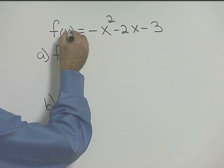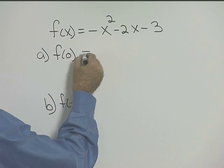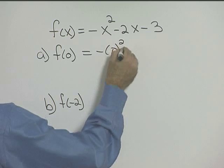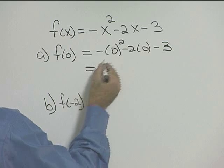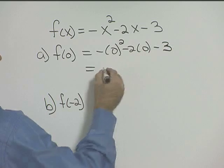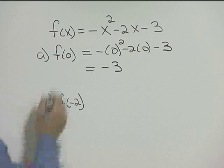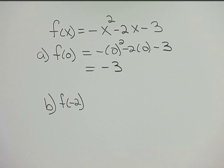So f of 0 means we replace x with 0. Every place there's an x, let's put a 0. Well that 0 minus 0, we're just simply left with negative 3. So f of 0 is equal to negative 3.